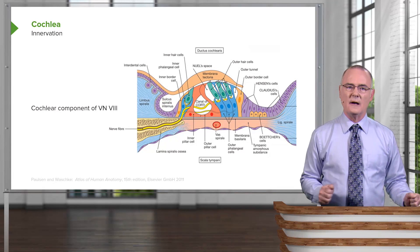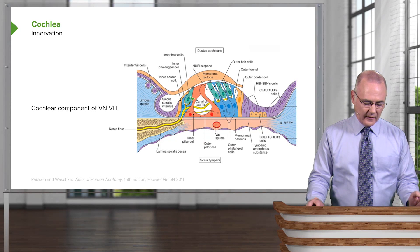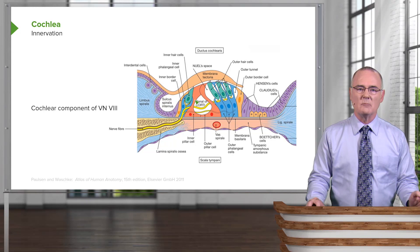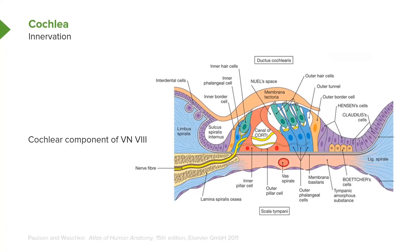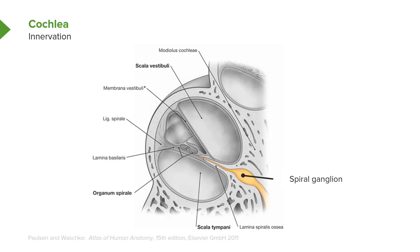Once the hair cells have become depolarized, action potentials are conveyed along the nerve fibers that make up the cochlear component of cranial nerve number eight. We see innervation of the hair cell with a cochlear nerve fiber running through a bony canal. Those nerve fibers come together, and in this area the nerve cell bodies — the cochlear nerve afferent fibers — reside within the spiral ganglion.